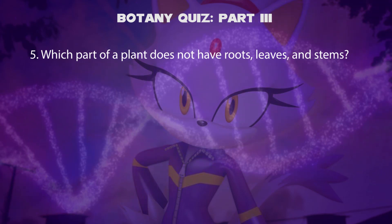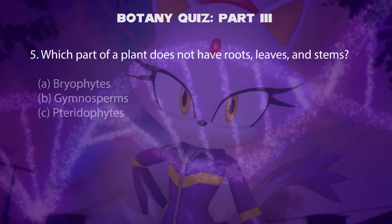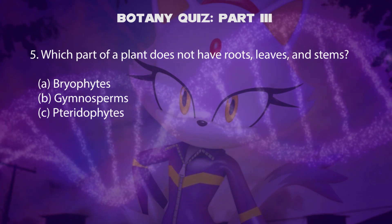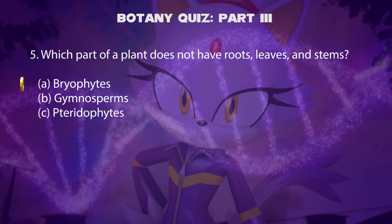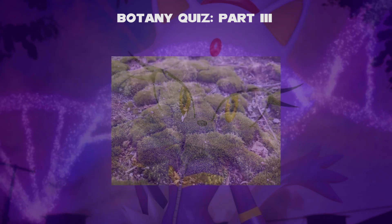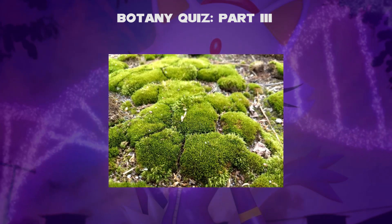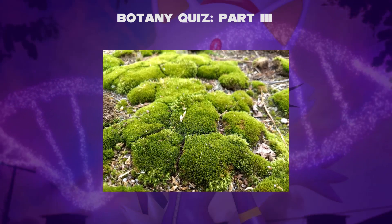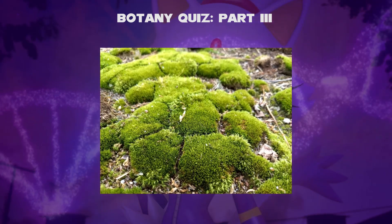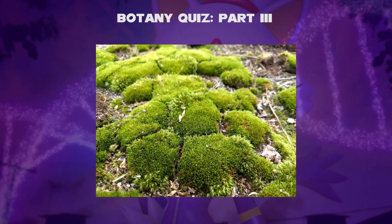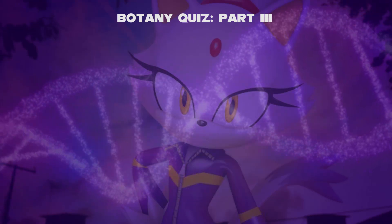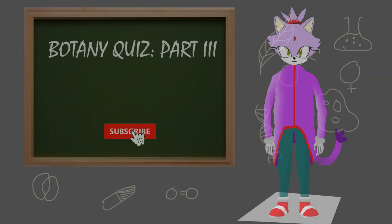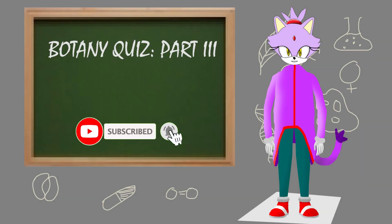Fifth question: which part of a plant does not have roots, leaves, and stems — is it bryophytes, gymnosperms, or trytophytes? The answer is bryophytes. Bryophytes are non-vascular plants that do not have true roots, stems, or leaves. They rely on simple structures for water and nutrient absorption and distribution because they lack the vascular tissues found in higher plants. That's it for this botany quiz, part three — like, comment, and subscribe!